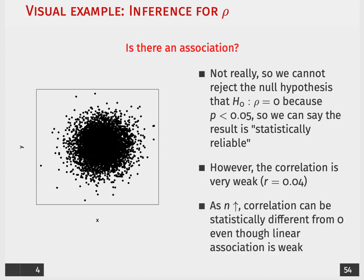As a general rule, though, as the number of observations increases, the correlation can be statistically different from 0, even though the linear association is weak. And again, that's just kind of a function of what's going to be in our denominator. We will always have more precise estimates when we have larger numbers of observations in our sample. That doesn't necessarily mean, though, that the relationship will be stronger. Just our precision around the estimate will be.